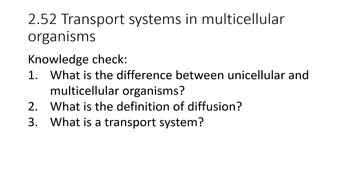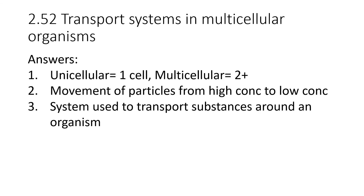Here's a short knowledge check — pause the video and have a go. Unicellular organisms are made of one cell; multicellular organisms are made of two cells or more. Diffusion is the movement of particles from high concentration to low concentration. A transport system is a system used to transport substances around an organism.